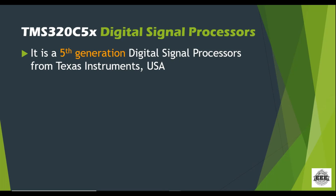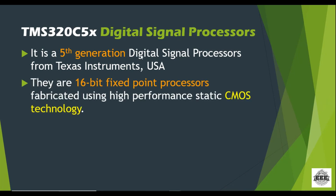Today we are going to see about this architecture. The architecture name is TMS320C5x digital signal processor. This is one type of architecture; another type is 54x. The 'C' is mentioned for CMOS technology which this architecture is made up of. The TMS320C5x is a fifth generation digital signal processor.